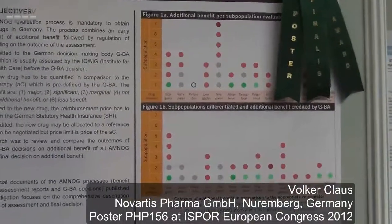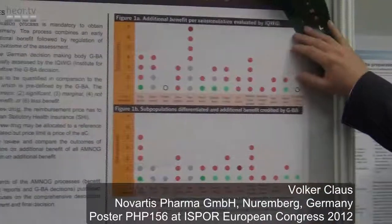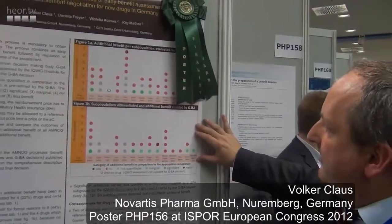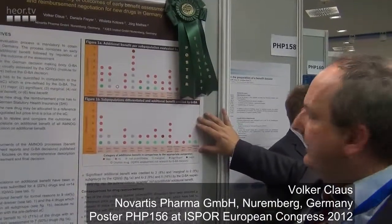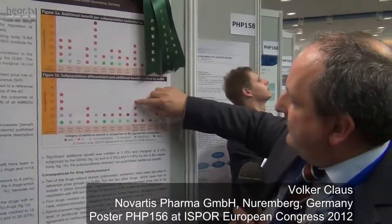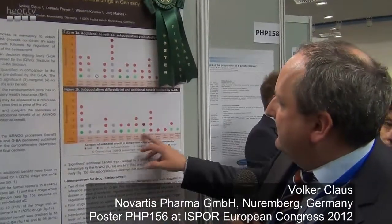As you see here, on top is the Equic assessment on additional benefit, and on the bottom graph is the final GBA decision. Each dot represents the additional benefit for a subgroup that has been assessed. The red dots show no additional benefit, and the green ones represent an additional benefit of a certain quantity.